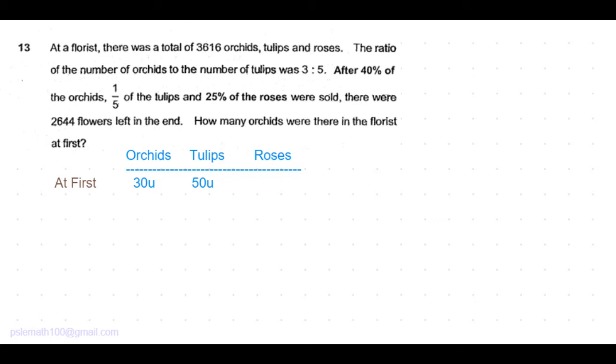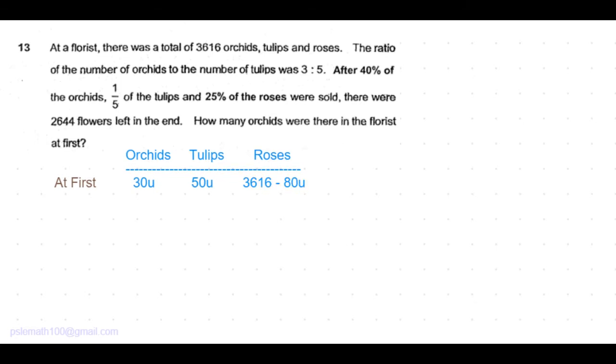The total number of flowers is given to be 3616. So the number of roses should be the remaining number. Orchids and tulips together is 80 units. So roses should be 3616 minus 80 units.